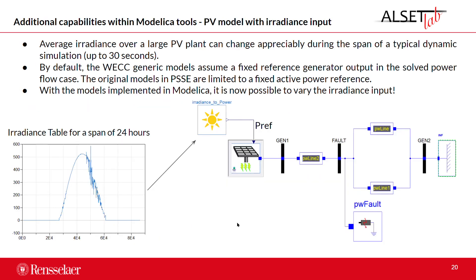Additional capabilities of Modelica give us more flexibility in that we don't need to have a constant power reference to the model; we can connect other components. For instance, a radiance-to-power module where we could use 24-hour data in order to generate the power for the simulation.